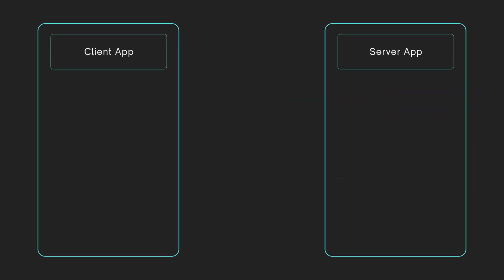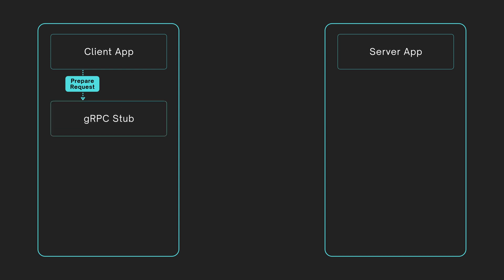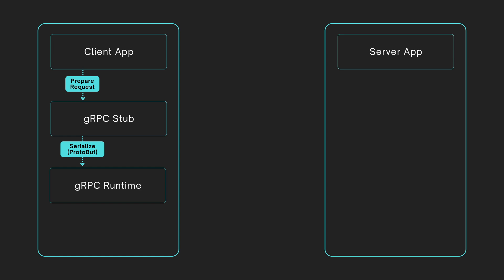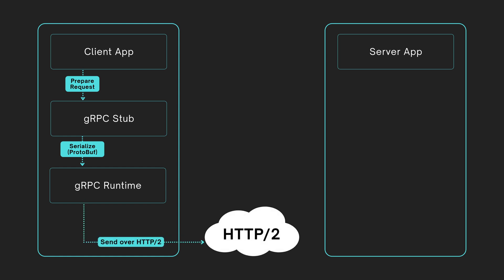Let's explore how gRPC handles client-server communication step by step. It begins with the client application preparing a request for a remote function call. The client stub then serializes the data using protocol buffers, a compact and efficient binary format. gRPC forwards the encoded data through the runtime and transmits it over HTTP/2.